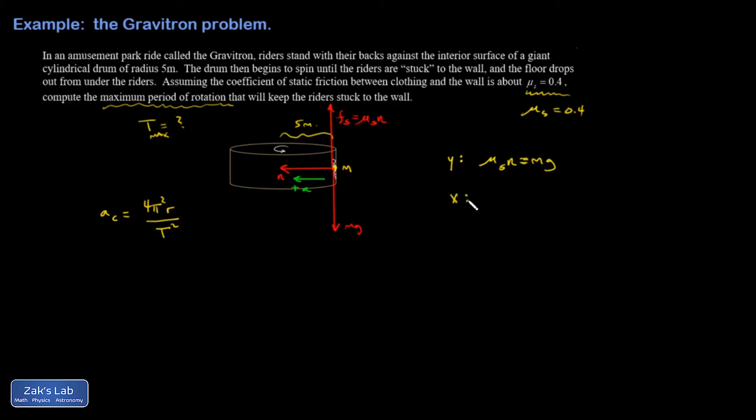X direction analysis. There's only one force pointing in the x direction. That's supplying the force necessary to create that centripetal acceleration. So I have n, that's f net, equals ma.